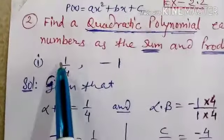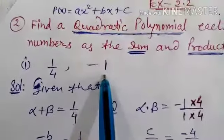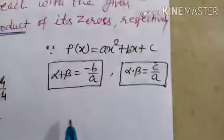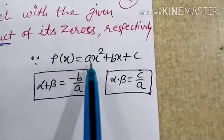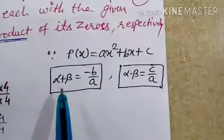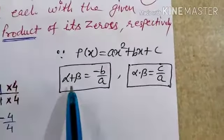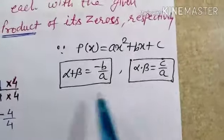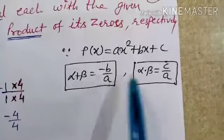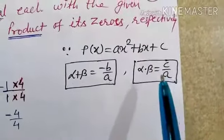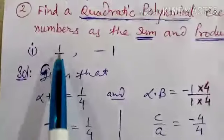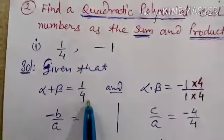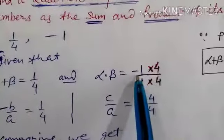This is the first part: 1/4 is the sum of zeros and minus 1 is the product of zeros. Before we start, let us recap: since p(x) equals x squared plus bx plus c, and alpha and beta are its zeros, then alpha plus beta equals minus b by a, and alpha times beta equals c by a. So sum of zeros is minus b by a and product of zeros is c by a. Given that alpha plus beta equals 1/4 and alpha times beta equals minus 1.